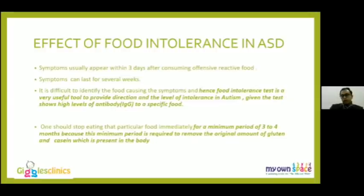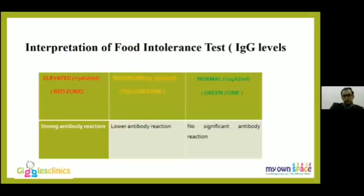The amount of gluten consumed matters less than the level of intolerance in determining how long it takes to clear. Once gluten is consumed, it generally takes a minimum of three months for IgG antibodies to be eliminated from the body. Regarding interpreting food intolerance tests: IgG levels above 30 are considered elevated, 25–30 is borderline, and below 24 is normal.